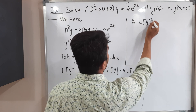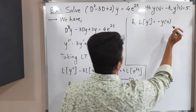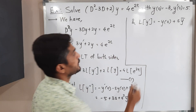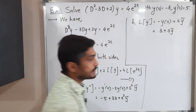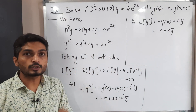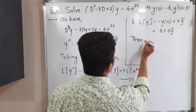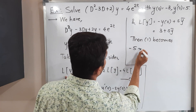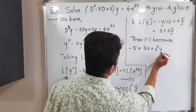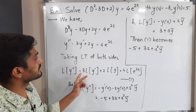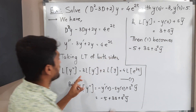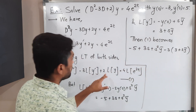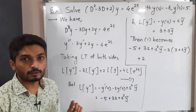The formula for L{y'} is s·ȳ - y(0). With y(0) = -3, this gives: sȳ + 3. Now we have both values and can substitute them into equation 1.